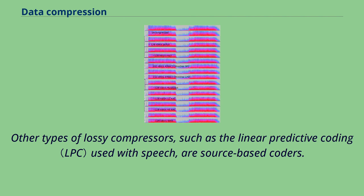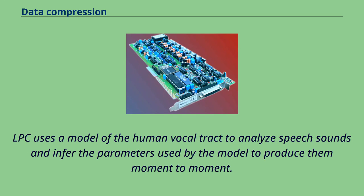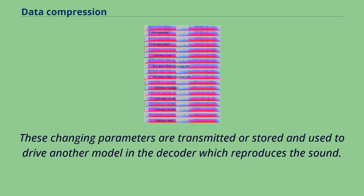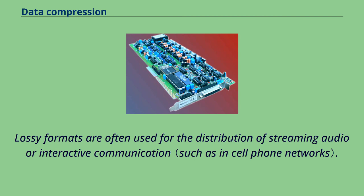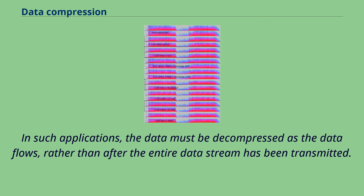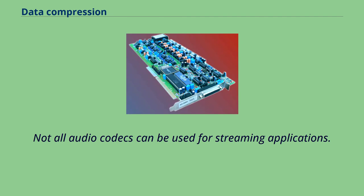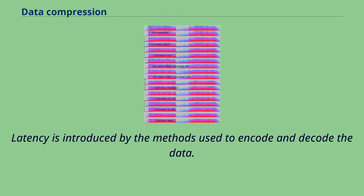Other types of lossy compressors, such as the linear predictive coding used with speech, are source-based coders. LPC uses a model of the human vocal tract to analyze speech sounds and infer the parameters used by the model to produce them moment-to-moment. These changing parameters are transmitted or stored and used to drive another model in the decoder which reproduces the sound. Lossy formats are often used for the distribution of streaming audio or interactive communication. In such applications, the data must be decompressed as the data flows, rather than after the entire data stream has been transmitted. Not all audio codecs can be used for streaming applications. Latency is introduced by the methods used to encode and decode the data.